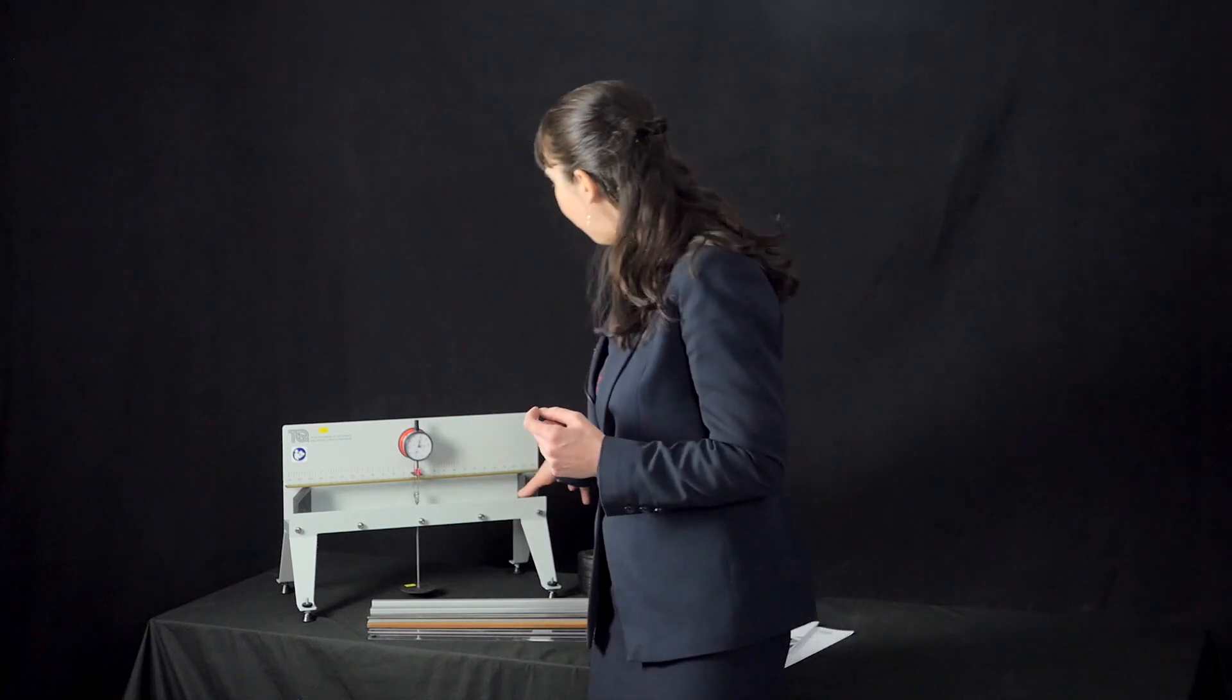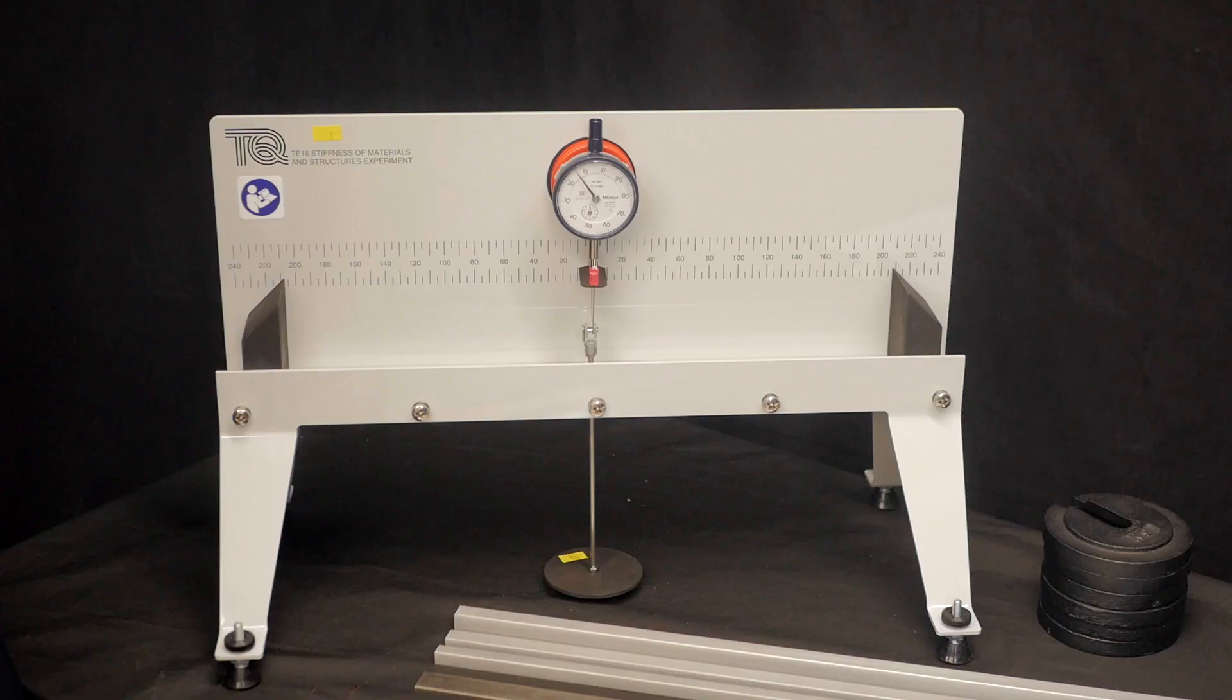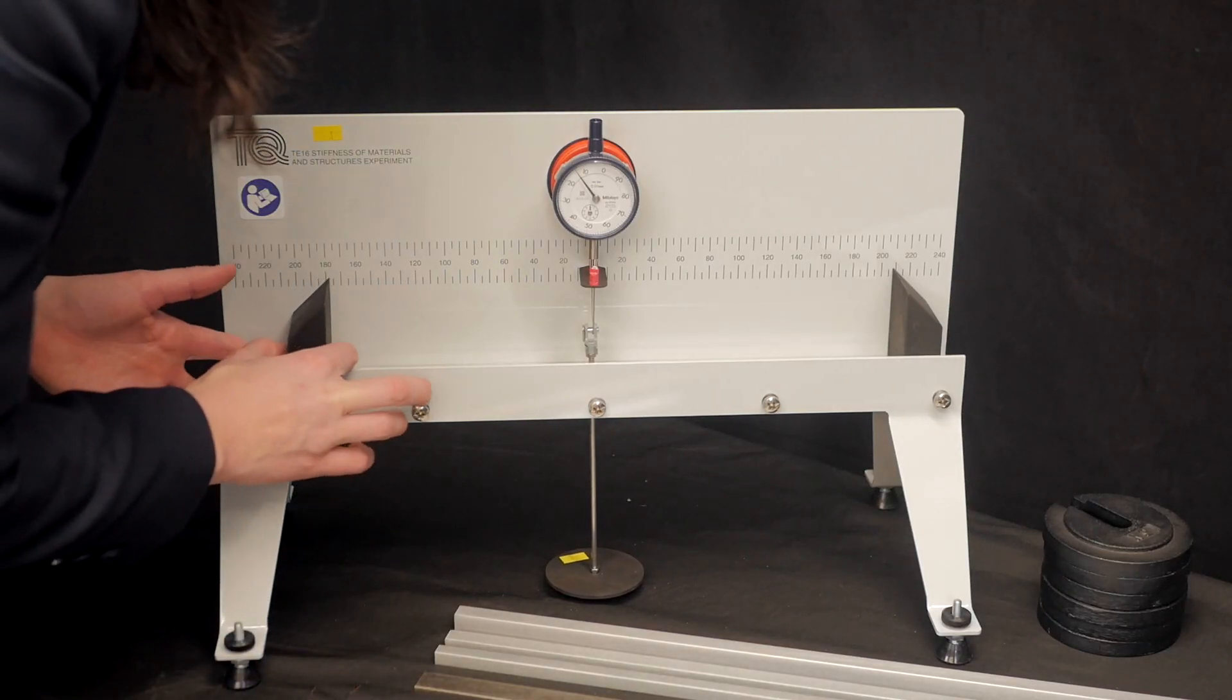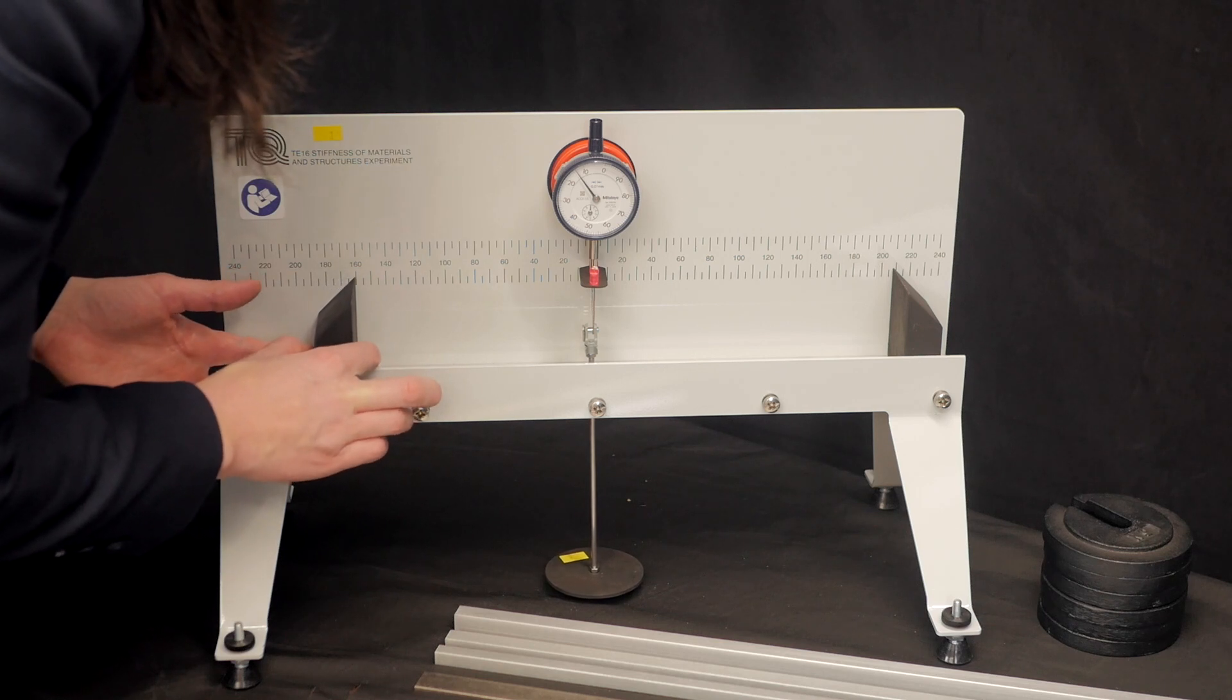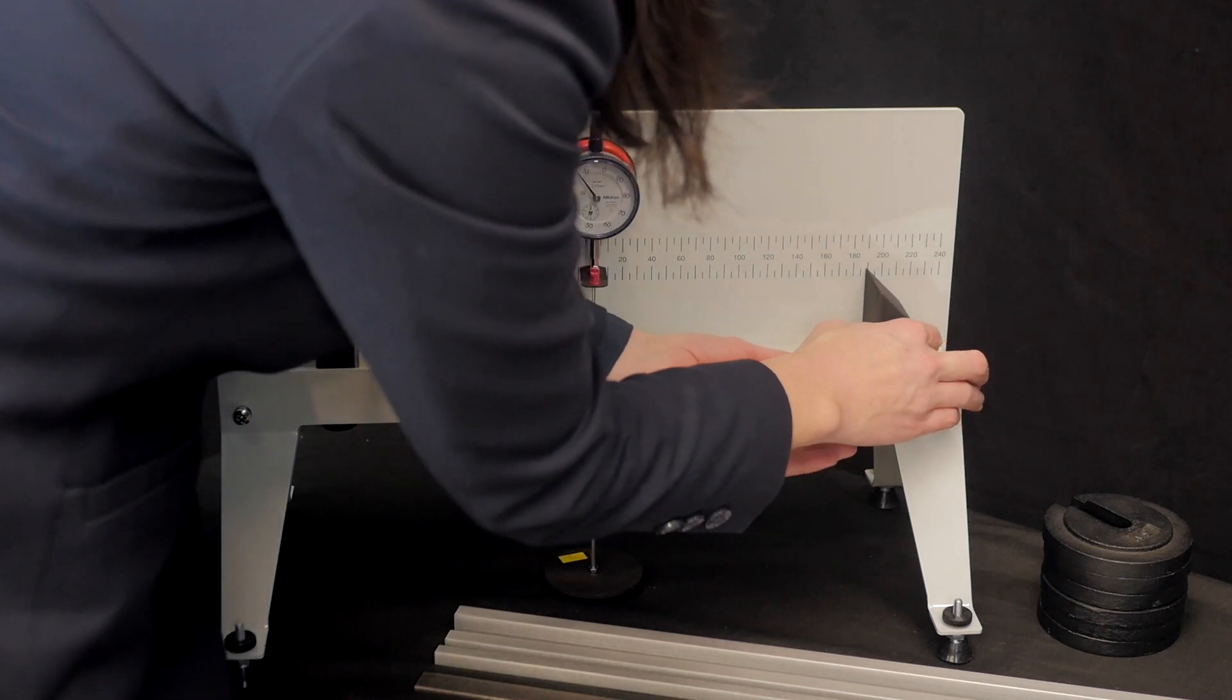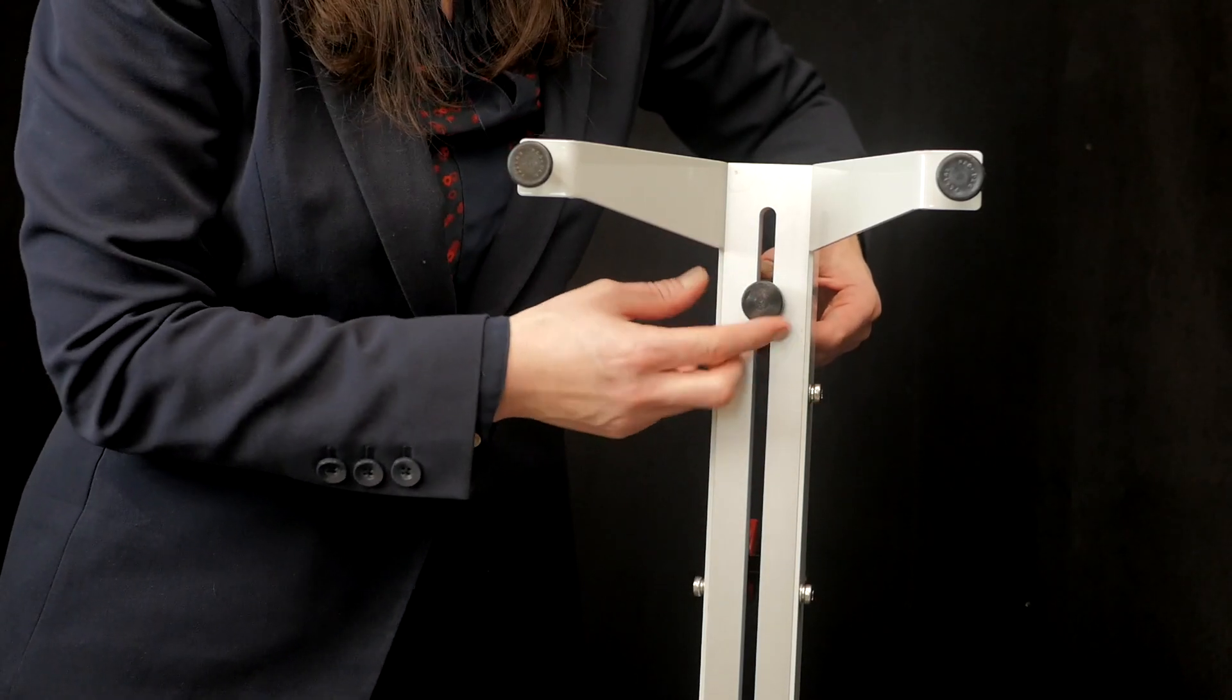There are two adjustable knife edges that support the specimens that simulate the frictionless pivots which mean they do not resist bending the beam, allowing the beam to be simply supported. The knife edges can be set to any position along the apparatus up to 400mm apart. These thumb screws lock them into position.